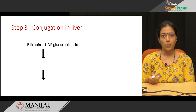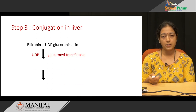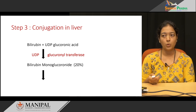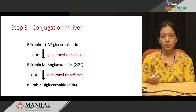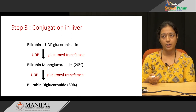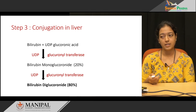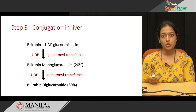In the liver, hepatocytes play an important role in the conjugation process. Bilirubin reacts with UDP-glucuronic acid in the presence of the enzyme glucuronyl transferase; UDP is released and bilirubin monoglucuronide is formed. In the blood, around 20% of bilirubin is in bilirubin monoglucuronide form. The same reaction continues to form bilirubin diglucuronide, which accounts for 80% of bilirubin in the blood.